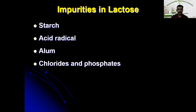For chlorides and phosphates, to the solution of lactose we add a small quantity of silver nitrate. If a yellow or white precipitate is obtained, that indicates the presence of chloride and phosphate.